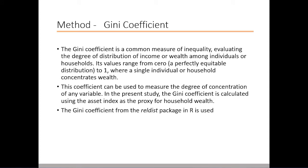In addition, in this study we use the Gini coefficient as a measure of concentration of assets among households. The Gini coefficient is a common measure of inequality, typically evaluating the degree of distribution of income or wealth among individuals or households. Its value ranges from 0, which is a perfectly equitable distribution, to 1, where a single individual or household concentrates all wealth. In this study, however, the concentration of income is not measured, but rather the degree of concentration of the asset index.